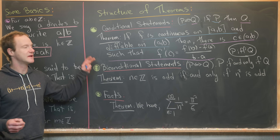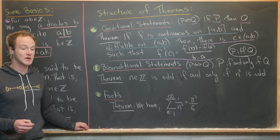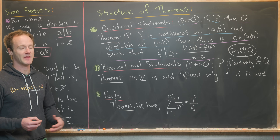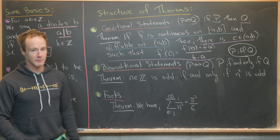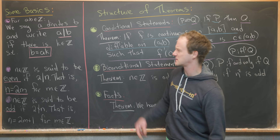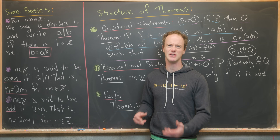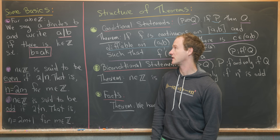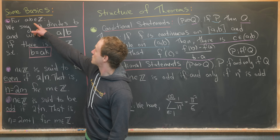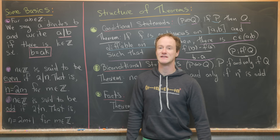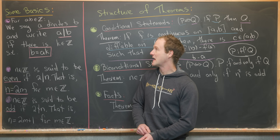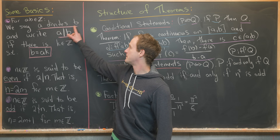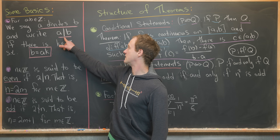Now that we've seen the hierarchy of theorems and some structure of theorems, we're going to prove a couple of very simple results using the method of direct proof. Before we do that, I want to recall some basic definitions. The first one is the notion of divisibility.